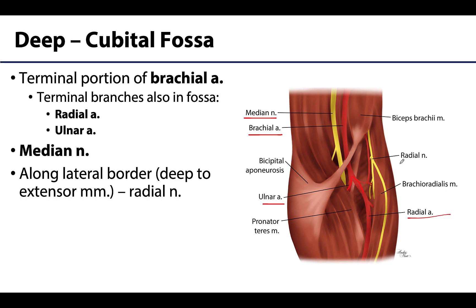The radial nerve is located along the lateral border of the cubital fossa, typically deep to the extensor muscles that form the lateral boundary. It will not be visible without retraction of these muscles, but it is worth noting its presence deep to this region.